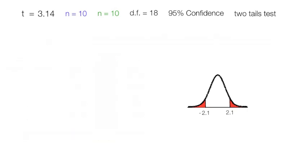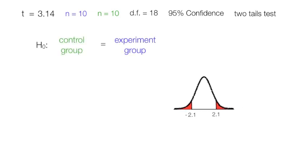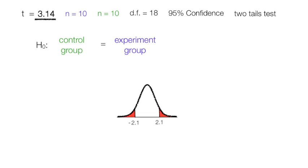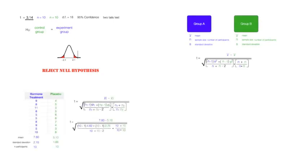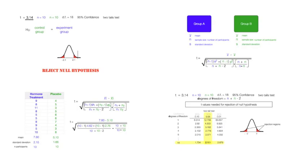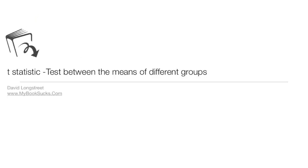We made the initial assumption of the null hypothesis — that the control group was equal to the experimental group, meaning our hormone treatment had no impact. But it looks like it does, because 3.14 falls in the red rejection region, so we reject the null hypothesis — our t-statistic fell outside the critical values. To summarize: I set up a null hypothesis, gave you the equation, used real numbers, and we decided whether to reject or accept the null hypothesis.